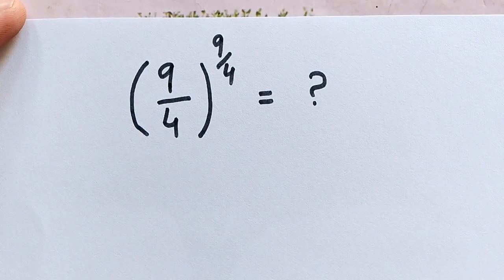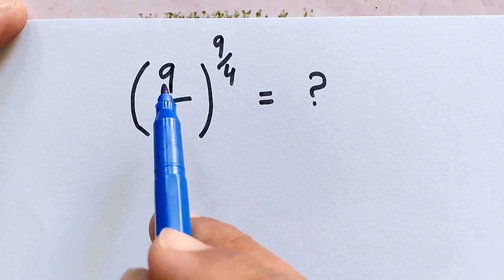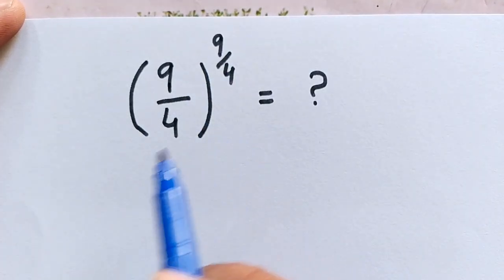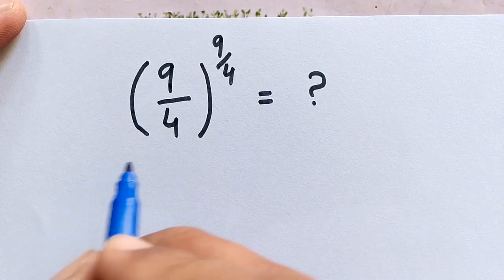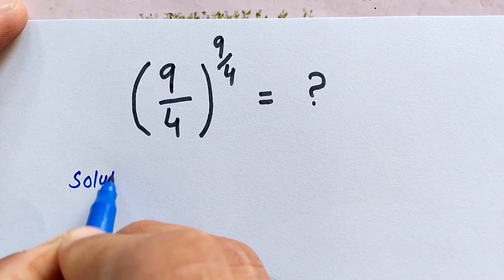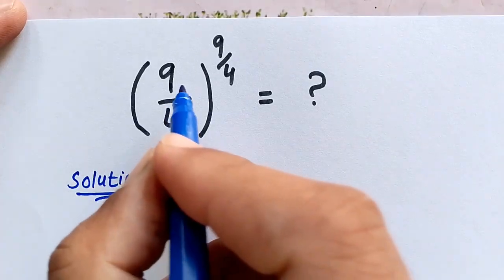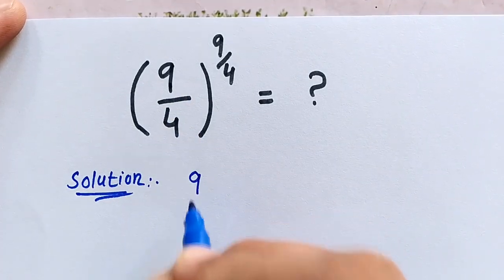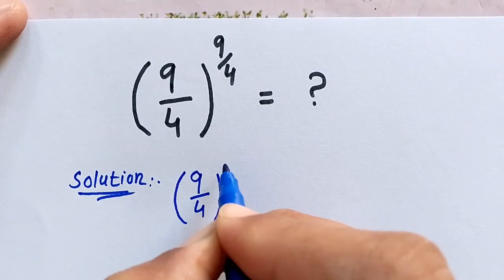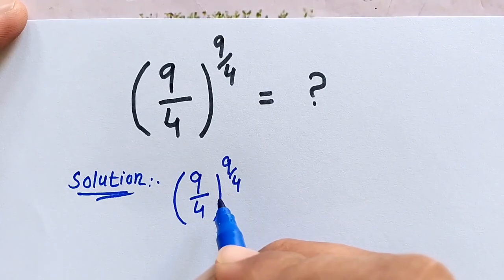Hello, you are welcome. How to solve this interesting question: 9 over 4 to the power of 9 over 4. Here the question is (9/4)^(9/4) — we have to simplify this.